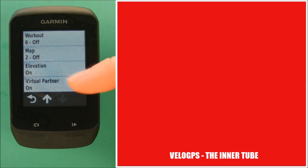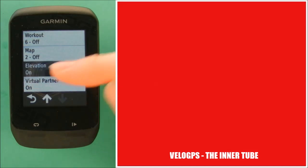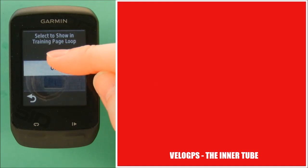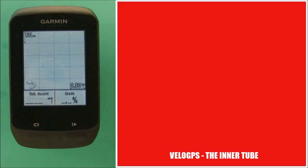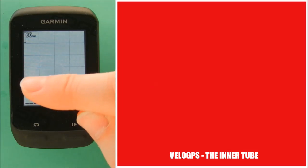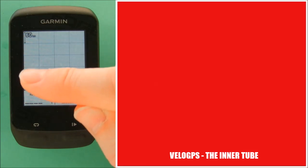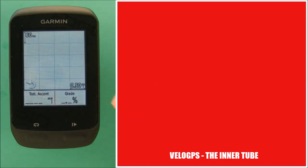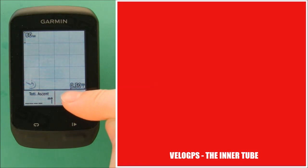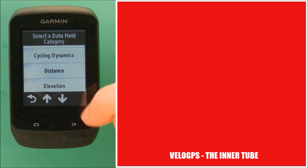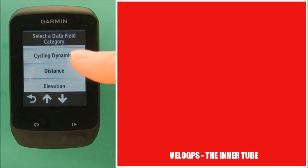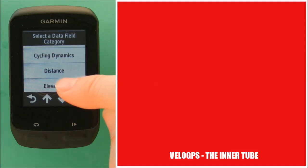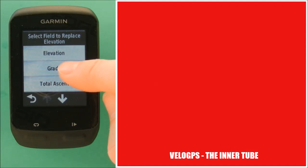Going back, we then have the elevation page, which we've got turned on. You'll notice this is a plot of elevation against distance. If you've uploaded a course with elevation data included, it enables you to trace your progress on climbs and descents and know what's coming up. You can adjust the data displayed at the bottom — there is an elevation category but you can also choose from any other category. I think we had grade selected on that one.